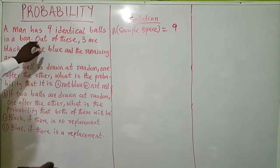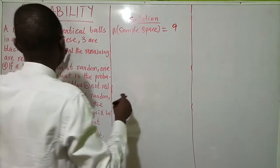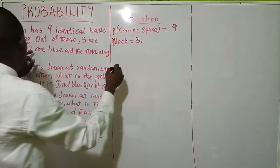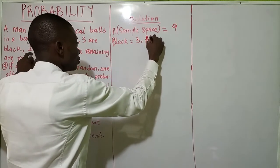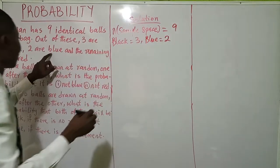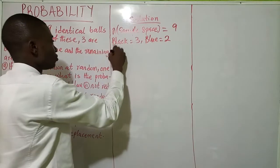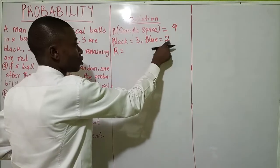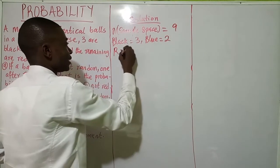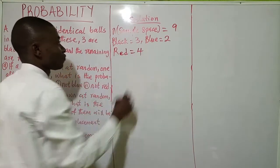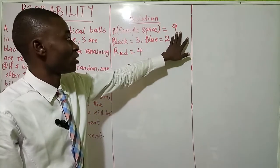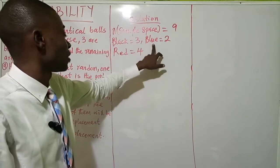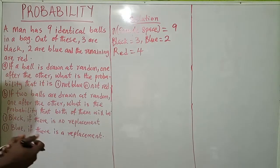Let's bring out all the expected outcomes. We have three black balls. Blue balls are two. The question says the remaining are red — so if black is three and blue is two, that is five. When you remove five from nine, the red balls will be four. So: sample space is nine, black balls are three, blue balls are two, and red balls are four.